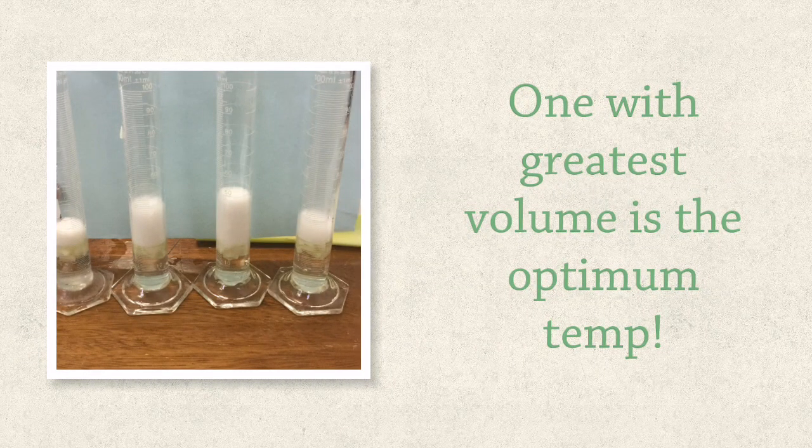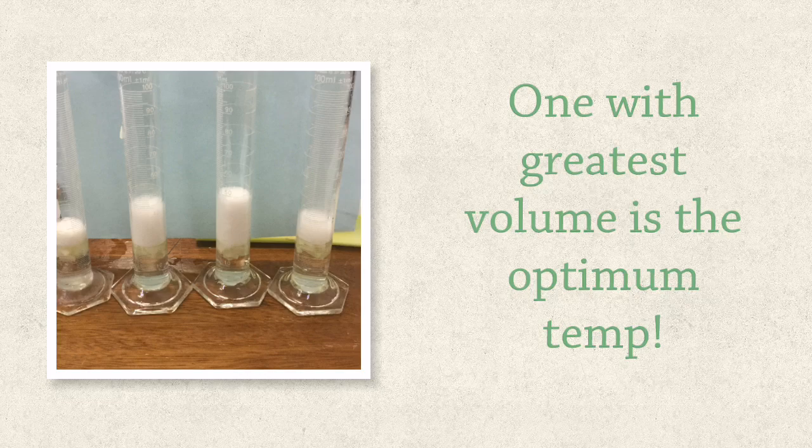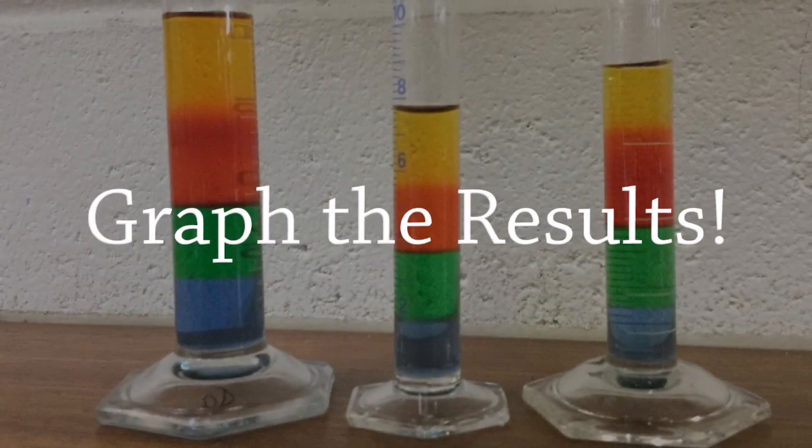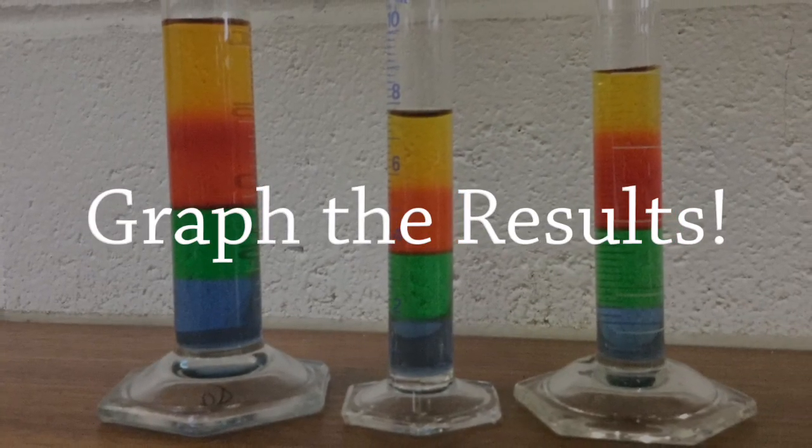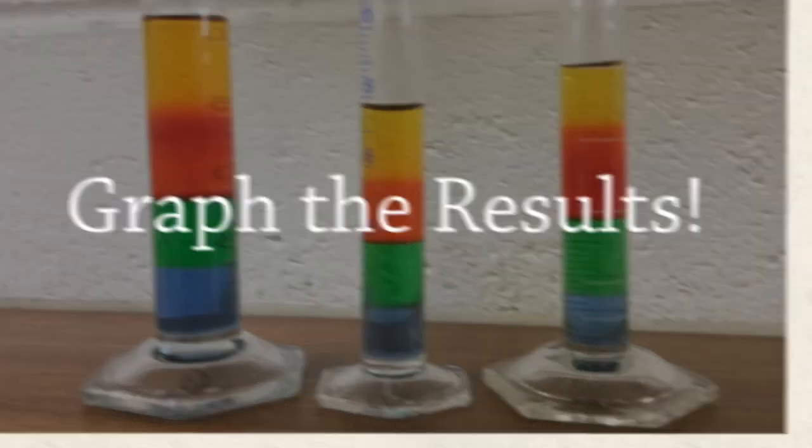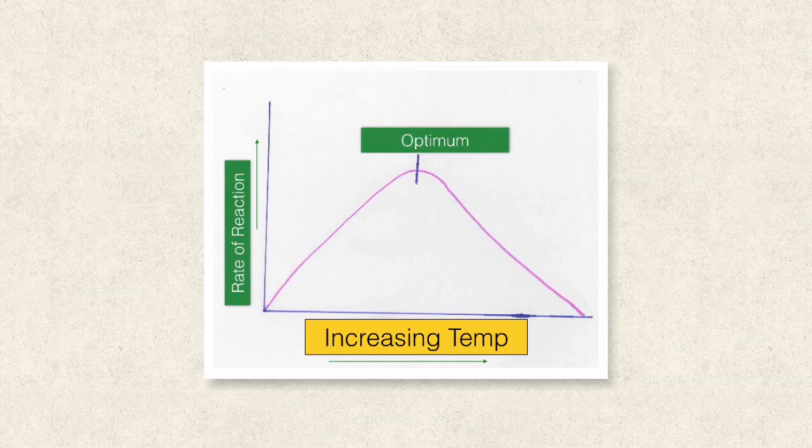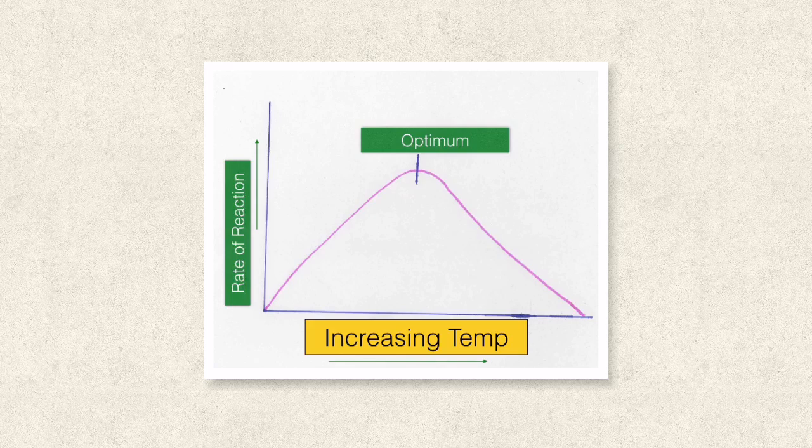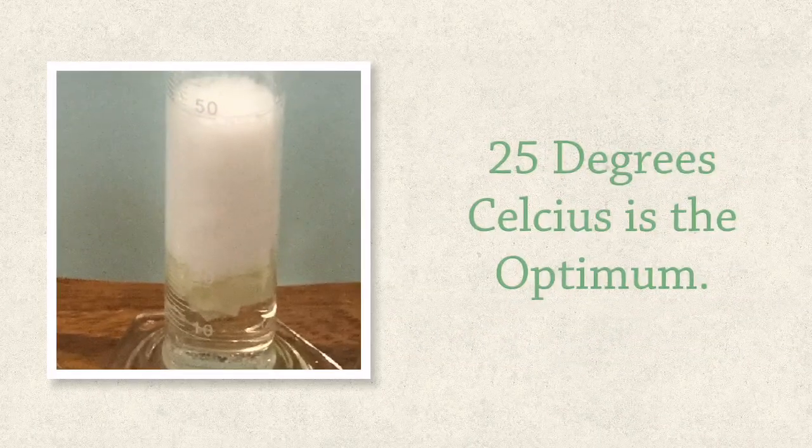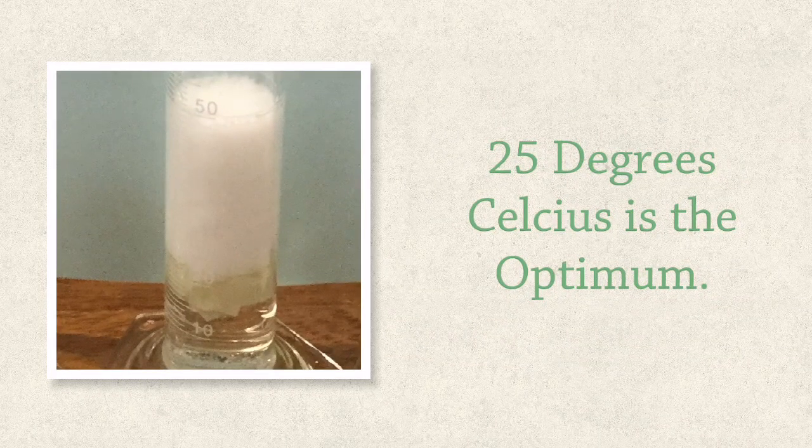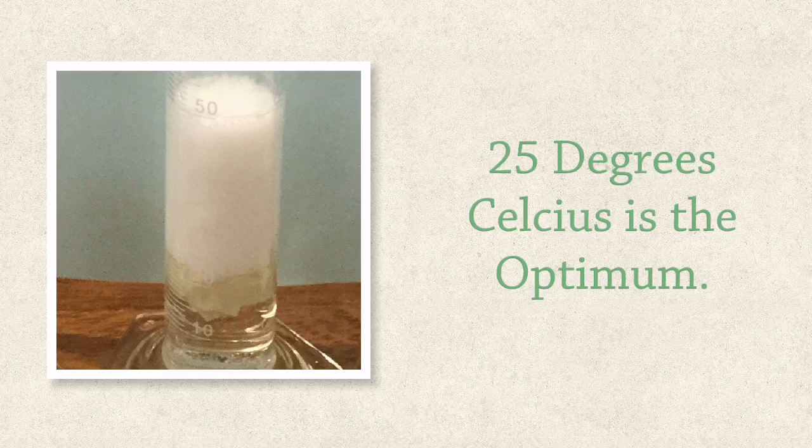When you've finished the practical, it should be apparent that one of the temperatures produced quite a lot more foam than all of the others and this was your optimum temperature. When you're satisfied and you've got all your results in your table, then you can start to draw your graph. And your graph should hopefully look something like this. After all your work, you should have determined that 25 degrees Celsius is the optimum temperature for catalase activity, particularly catalase sourced in celery.